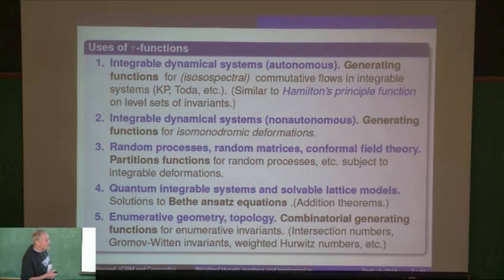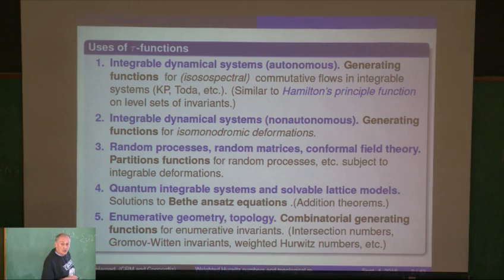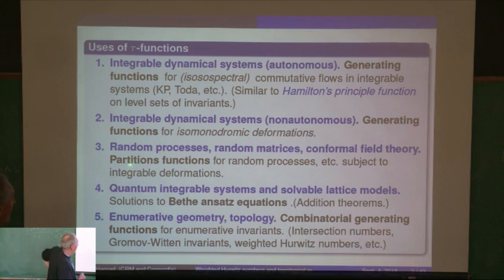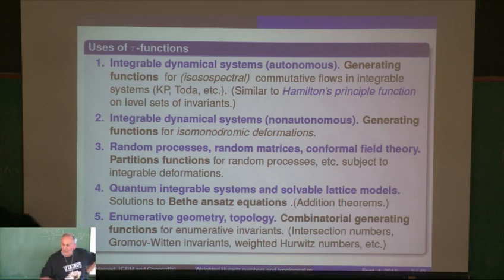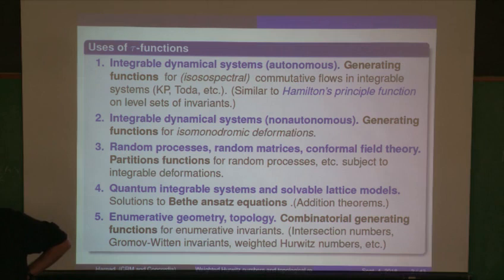It could be partition functions, a matrix integral, or a partition function for generating various types of random processes like Schur processes. There are always parameters — you have to have parameters; it's not a function. Under integrable deformations, the fourth use is in quantum integrable systems, where miraculously the tau function plays a role bridging classical and quantum.